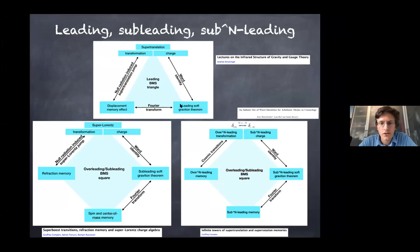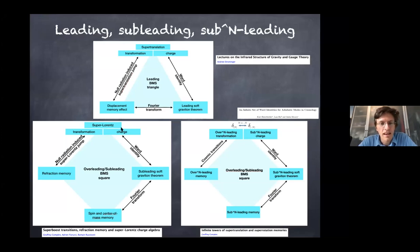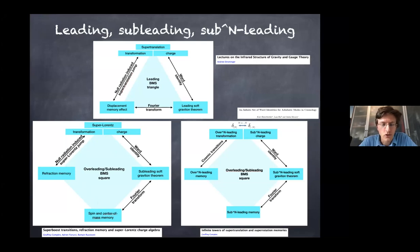The displacement memory effect corresponds to a step function in the way two observers get finally shifted. The step function under Fourier transform is a pole, and that pole appears in the leading soft graviton theorem. At sub-leading order, things are more complicated — it's not a triangle anymore. What appears as symmetries are super-Lorentz transformations, also called super-rotations. There are also Ward identities which are sub-leading soft graviton theorems, and you have different types of memories depending on which transformation you look at.